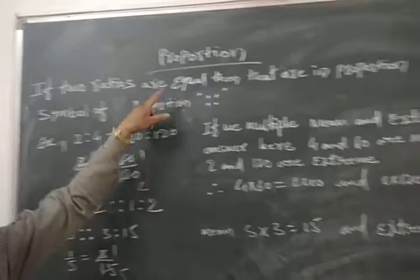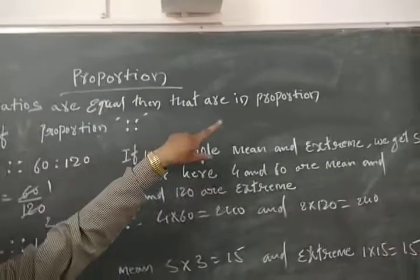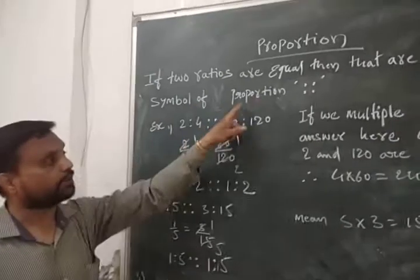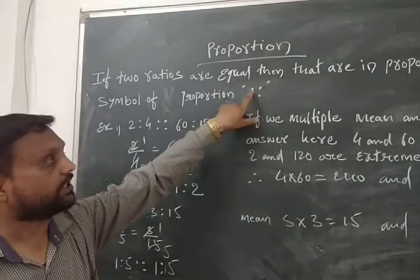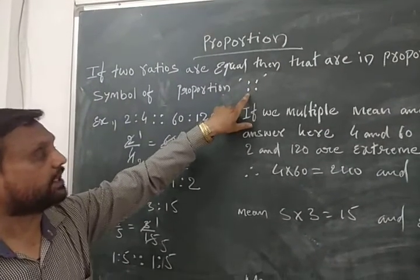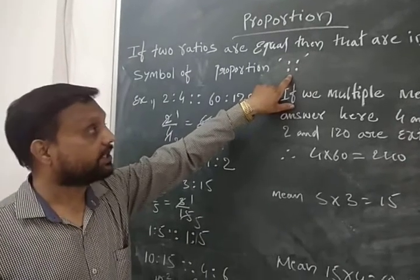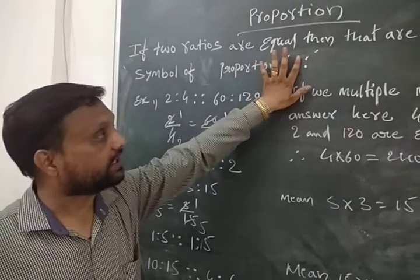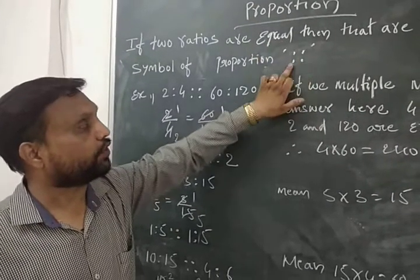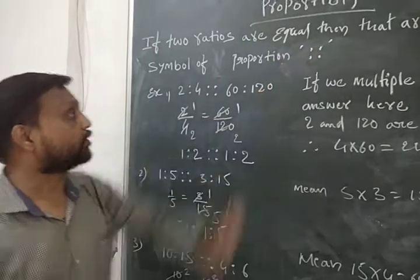Two ratios are equal then they are in proportion. Here the symbol of proportion is double colon — this four dot symbol is called the symbol of proportion. As we seen, two dots is a ratio, so if you put four dots it becomes a proportion.